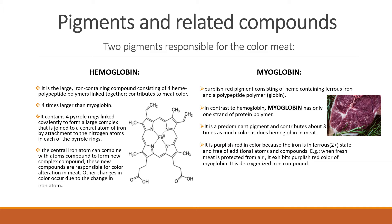Myoglobin is purplish-red in color because the iron is in ferrous state and free of additional atoms and compounds. For example, when fresh meat is protected from air, it exhibits the purplish-red color of myoglobin because it is a deoxygenated iron compound. Myoglobin and hemoglobin are closely related chemically because they both contain iron-containing pigments with heme as the common compound, and the only difference is in their protein component.